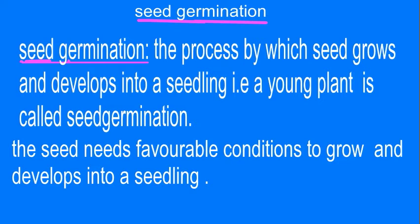Seed Germination: The process by which a seed grows and develops into a seedling, i.e. a young plant, is called Seed Germination. The seed needs favorable conditions to grow and develop into a seedling.